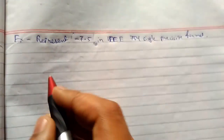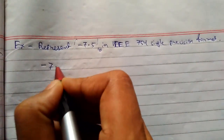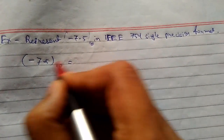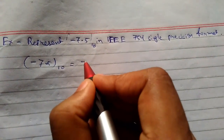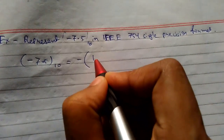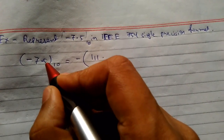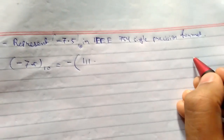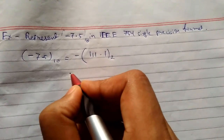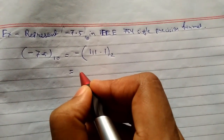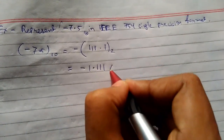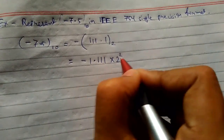First, we need to convert -7.5 in decimal into binary. The minus sign will come outside, and the value of 7 is 111 in binary, and 0.5 is 0.1. Now we present it in normalized form: -1.111 × 2² in binary.